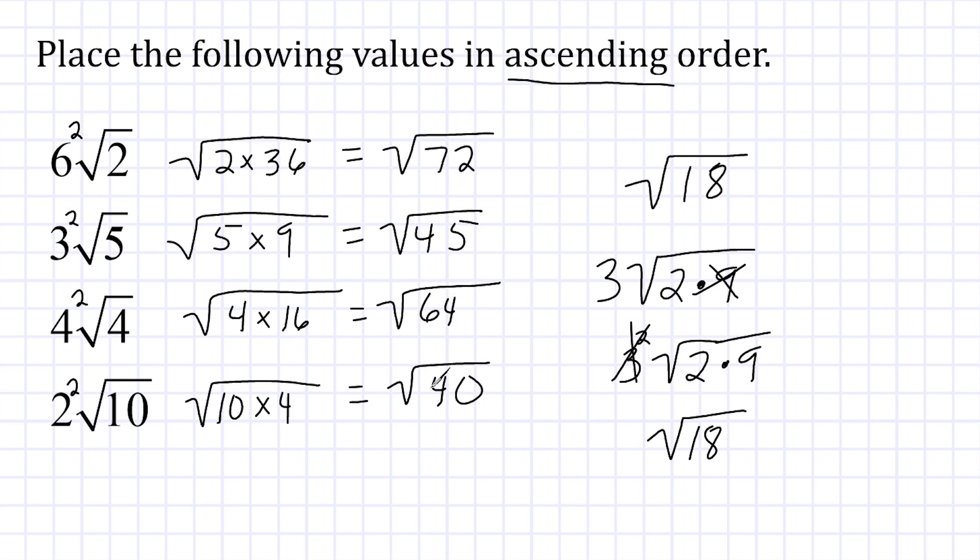Alright, now if we take a look at all of these values here, they're in the same form, so now we can compare them. And the smallest value here would be the square root of 40, which came from 2 times the square root of 10. So 2 times the square root of 10 is the smallest value. The next value is the square root of 45, which came from 3 times the square root of 5. And then we have the square root of 64, which came from 4 times the square root of 4. And the largest value is the square root of 72, which came from 6 times the square root of 2. So there you have it. We have all of our values in order from least to greatest or ascending order.